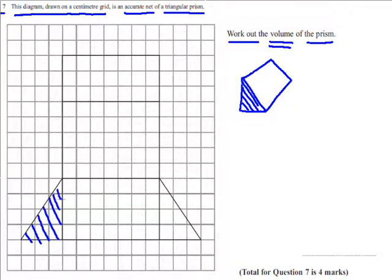So in this case, the cross section is the triangle that I'm shading in blue, which has a height of 4 centimeters and the base is 3 centimeters.